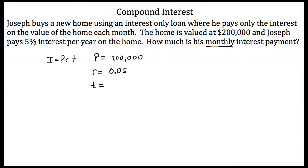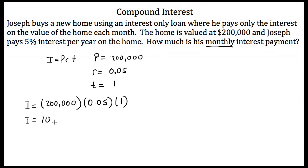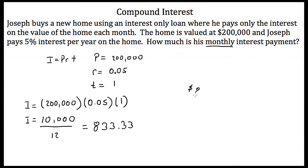I'm going to leave our interest rate as 0.05, or 5% per year, and set T equal to 1 year. Plugging in: I is equal to 200,000 times 0.05 times 1, which equals $10,000. That means Joseph pays $10,000 per year. To find the monthly payment, we divide by 12, which gives us $833.33. So Joseph is paying $833.33 every month for his home.